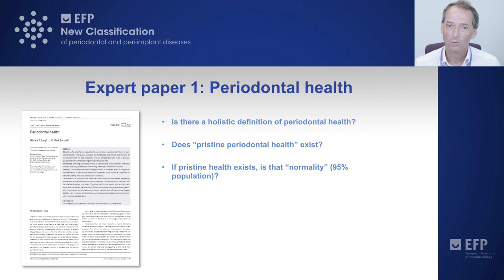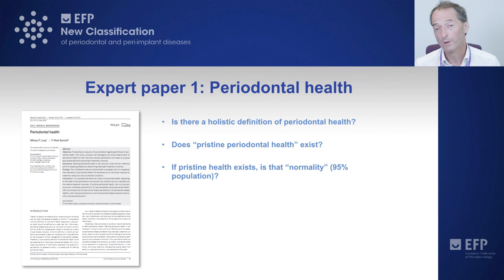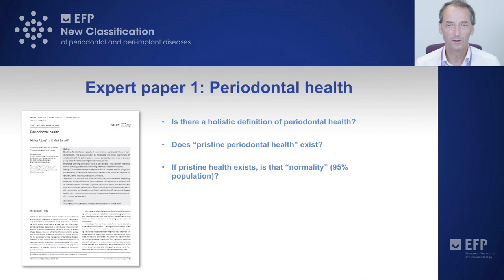In medicine generally, when we measure the height of an individual, or the number of red blood cells, or the concentration of haemoglobin in blood, there is a normal range. We call it a normal distribution or a Gaussian distribution, and normality is defined by 95% of the population. The lower 5% and the higher 5% of that population would be regarded as not normal, or abnormal — outside that normal range.